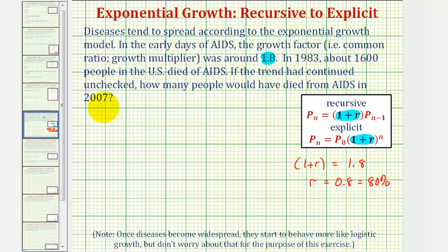We'll use this information to write the explicit equation or explicit formula for exponential growth, then determine how many people would have died of AIDS in the year 2007. First, in our equation, n will be equal to the number of years after 1983. So 1983 will be our base here, meaning n equals 0 corresponds to 1983.